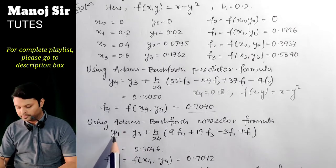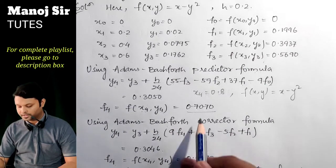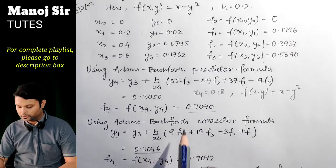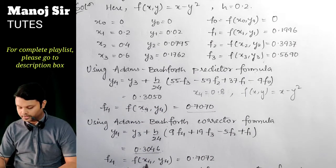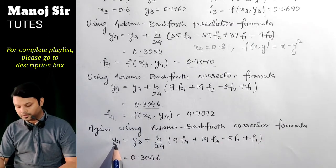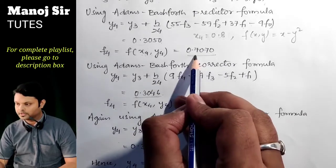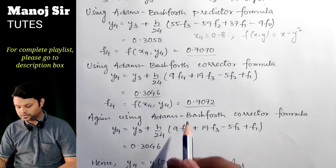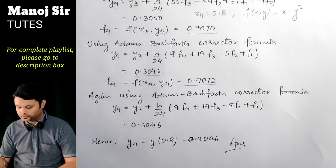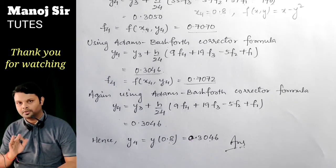For the next iteration, recalculate f₄ = f(0.8, 0.3046) = 0.8 − (0.3046)² = 0.7072. Substituting this into the corrector formula again: y₄ = y₃ + (h/24)(9f₄ + 19f₃ − 5f₂ + f₁) = 0.3046. Since both iterations give y₄ = 0.3046 to four decimal places, the values have converged. Therefore, y(0.8) = 0.3046.